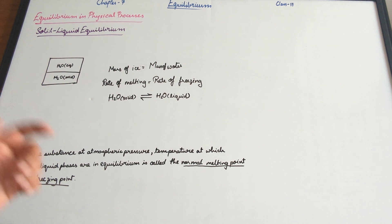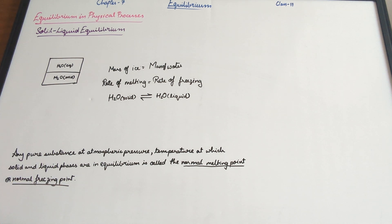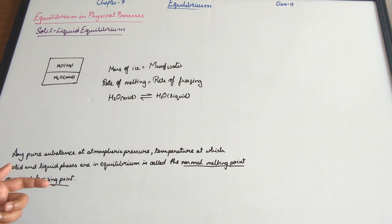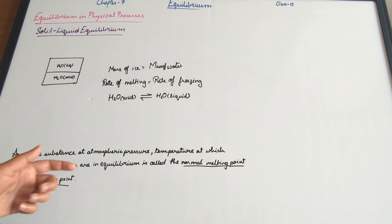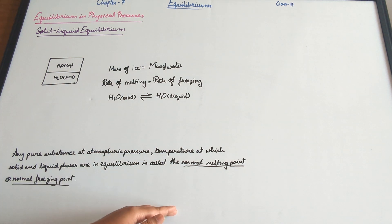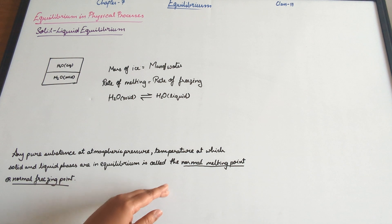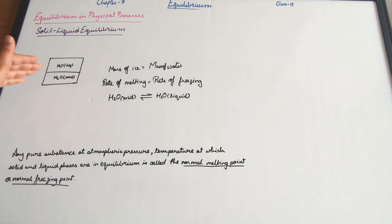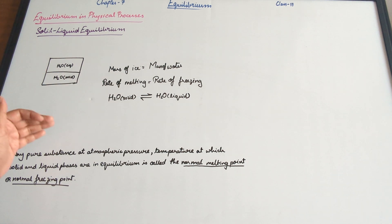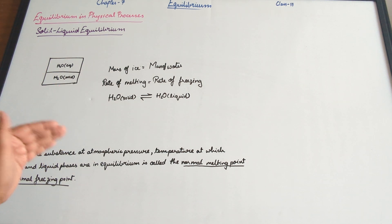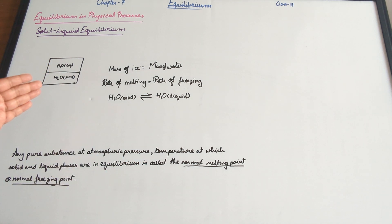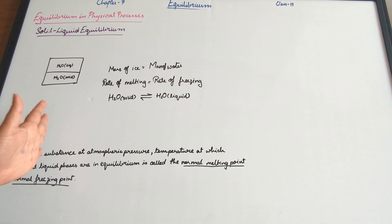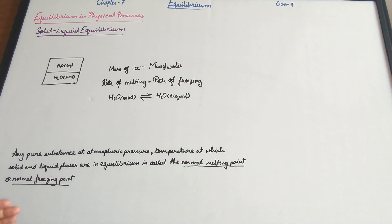For any pure substance at atmospheric pressure, the temperature at which the solid and liquid phases are in equilibrium is called the normal melting point or normal freezing point. Here, water and ice are in equilibrium at 273 Kelvin, and that temperature at which both phases are in equilibrium is called the normal melting point or the normal freezing point.